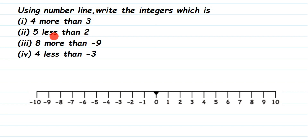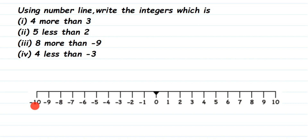So we have four more than three. Here is the number line I have drawn. We have zero in the middle — on the right side of zero we have positive integers, and on the left side we have negative integers. Minus one starts here and continues; I've taken it up to minus ten. On the right side I've taken up to ten, but you can continue further if you want.